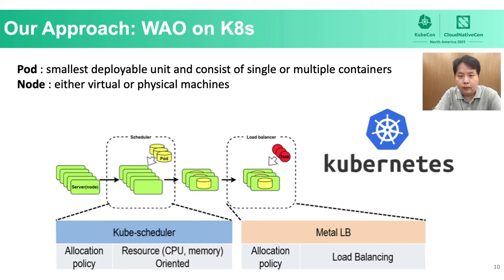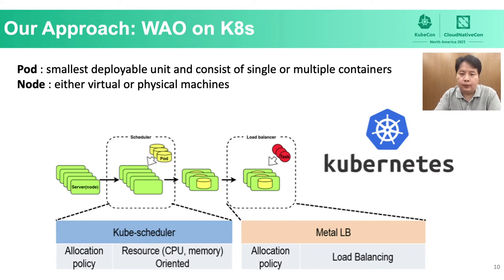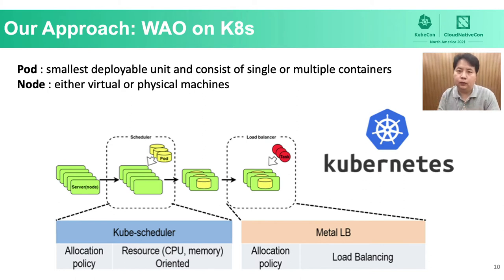This talk presents a WoW Workload Allocation Optimizer that manages microservice containers based on Kubernetes architecture. In Kubernetes, a pod is the smallest deployable unit and consists of single or multiple containers; a node can be either a virtual or physical machine. For task allocation on Kubernetes, the Kube Scheduler distributes pods to nodes, and then pods process users' requests. The Kube Scheduler considers only the resource status of each node, and Metal LB provides a basic load balancing solution for Kubernetes clusters. In other words, there is no power consumption concept taken into account in this process.